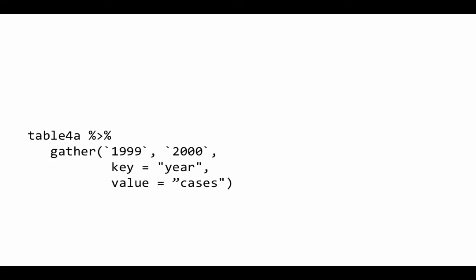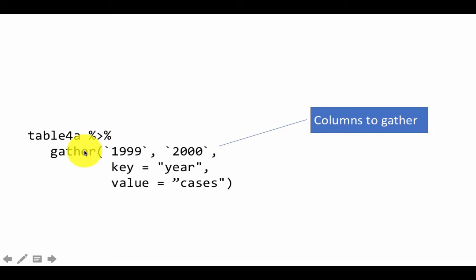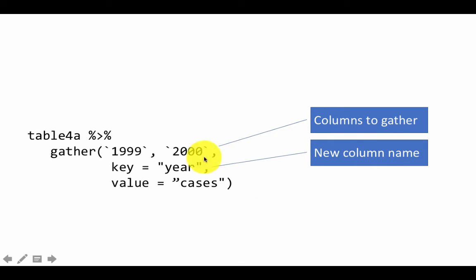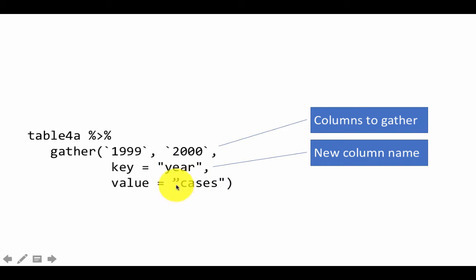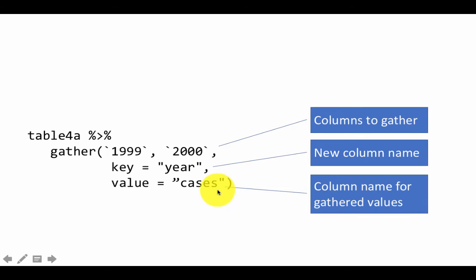To summarize: we specify gather, we specify the columns to be gathered — 1999 and 2000 — and the new column name for the gathered key column, which is year. Whatever value was under those two columns, we put into a new column called cases. Note that 1999 is an unusual column name so it requires backtick notation when typed in RStudio. That is how gathering works — this is how we use gather.